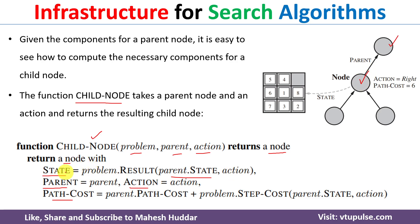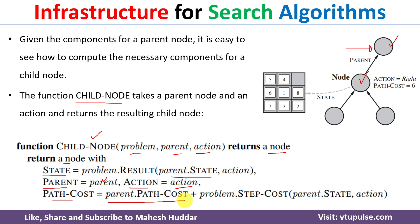That resulting state is the child node's state. The parent of this particular child is the current node, so node.parent is set to the parent itself. For node.action, it is the action we applied to the parent to generate the child node. For path cost, the child node's path cost is equivalent to the parent's path cost plus the step cost.